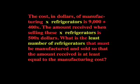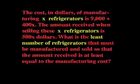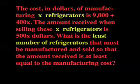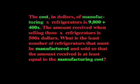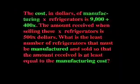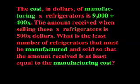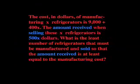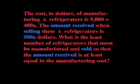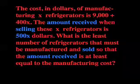Let's look for each element in the question in the problem. The question asks for the least number of refrigerators, and the problem talks about X refrigerators — X doesn't change and the number of refrigerators is the same. The question talks about manufacturing cost, and the problem tells us the cost is 9,000 plus 400X. The question asks about the amount received, and the problem tells us that is 500X dollars.